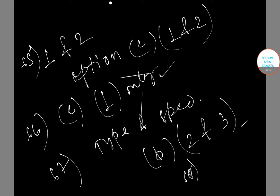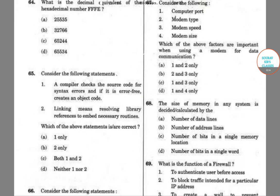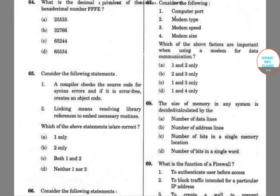Now we will do question number 68. Let me read the question first. Question number 68 says the size of memory in any system is decided or calculated by the number of data lines, number of address lines, number of beats in a single memory location and number of beats in a single word.